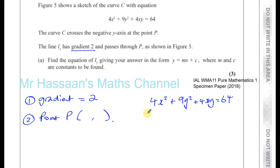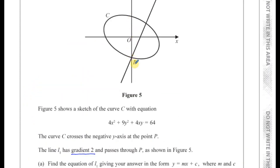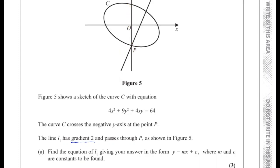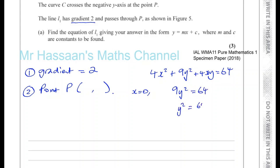We know that the curve crosses the y-axis when x is 0 — every point on the y-axis has x equal to 0. So if we substitute x equals 0 into this equation, we'll find the y-coordinates of where it crosses the y-axis. With x equals 0, we get 9y² — the other terms become 0 because they contain x — equals 64.